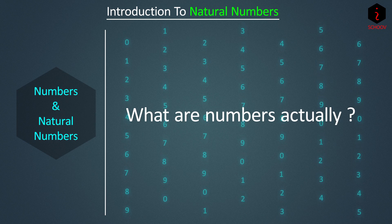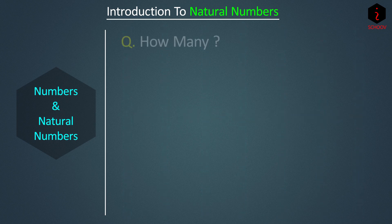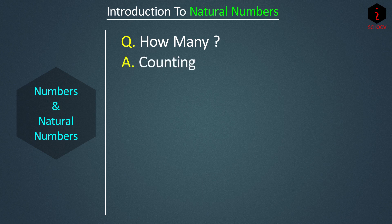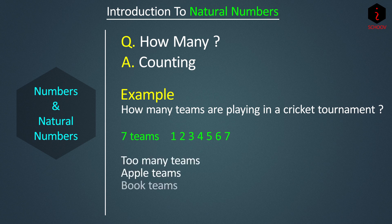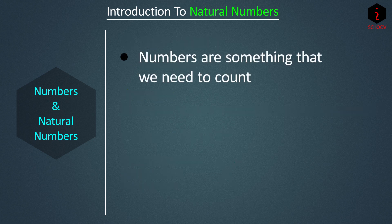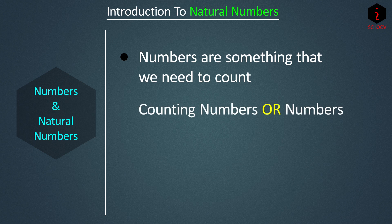What are numbers? We need something to answer the question 'how many,' and when we answer that question we are counting. For example, if I ask how many teams are playing in a cricket tournament, the answer can be seven teams — it cannot be 'too many teams' or 'apple teams.' It has to be a number. So numbers are what we need to count, and hence they are called counting numbers.